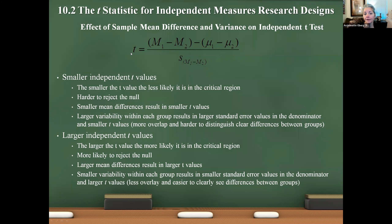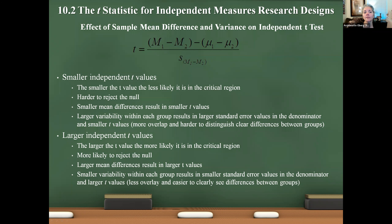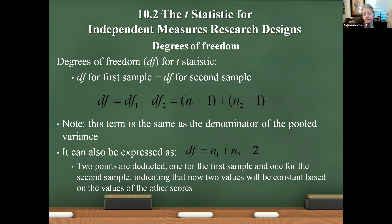When you have larger variability within each group, that can increase your standard error, which may cause a smaller T value — because larger variance means a larger denominator and therefore a smaller T. Larger independent T values are indicative of larger differences between the two means; they're more likely to reject the null. Typically a smaller standard error, meaning a smaller denominator, will result in a larger T value.